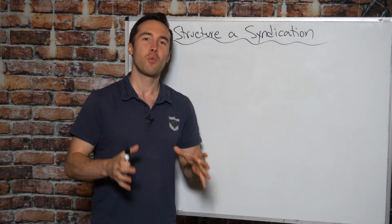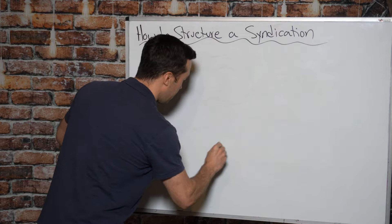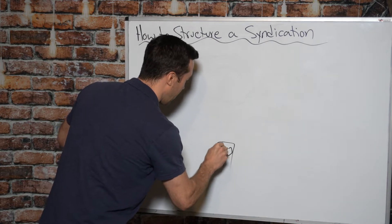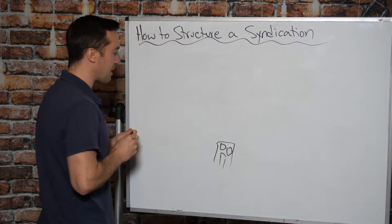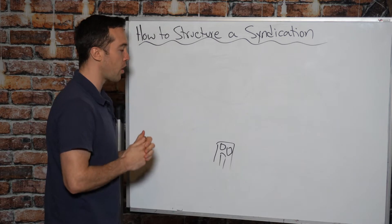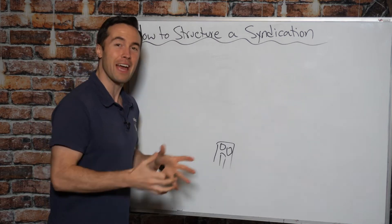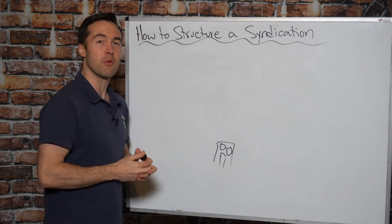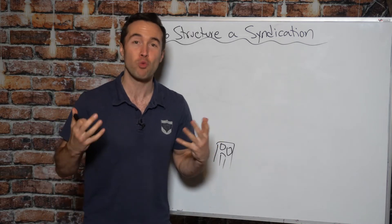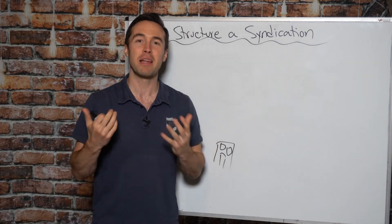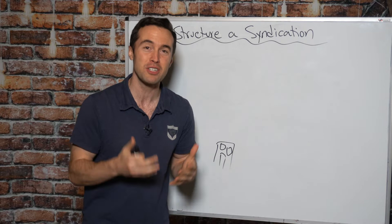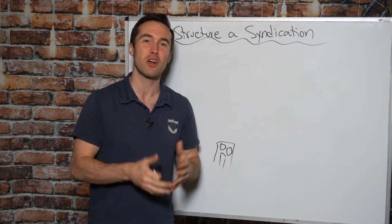Let's start off with the basics. You have found a property. This is the property right here. It's a good deal. You know how to make money with it. It hits all your return targets, but you don't have the equity needed to take this deal down on your own. So you have to go out and raise private equity from investors. But what is the most efficient way? What is the most efficient structure to do that?